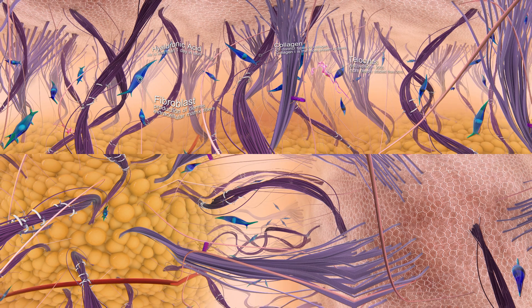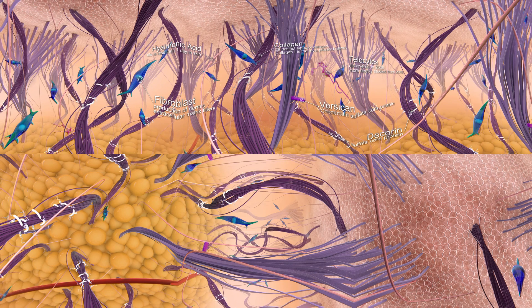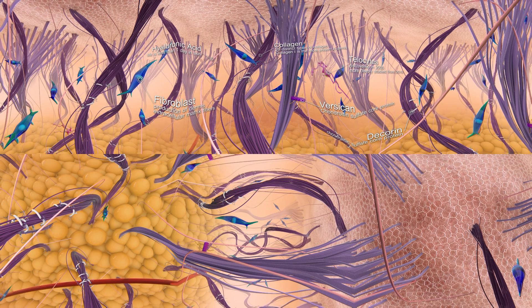Pay attention to the red cells with tentacles. They are telocytes, recently discovered cells to work in collaboration with fibroblasts for skin matrix homeostasis. Also, have a look at the proteoglycans, versican and decorin that play a significant role in maintaining the organization of the matrix fibers.